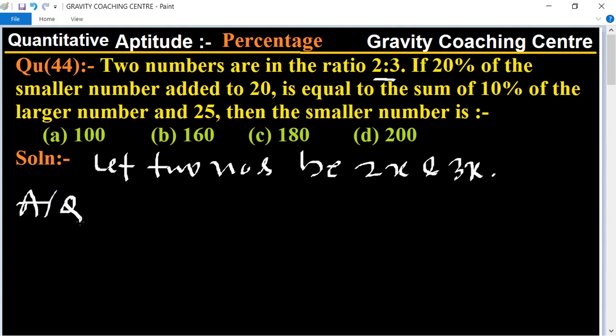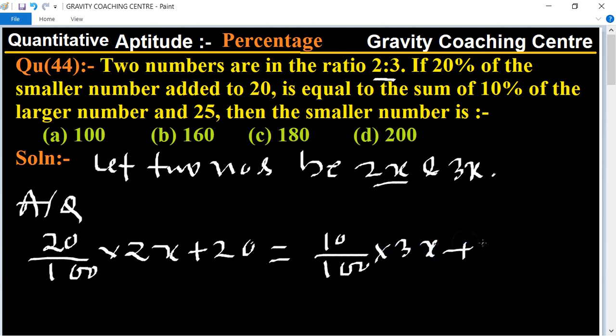According to the question, 20% of the smaller number is 20 upon 100 into 2x, and 20 is added. This equals 10% of the larger one, which is 10 upon 100 into 3x, and add 25.